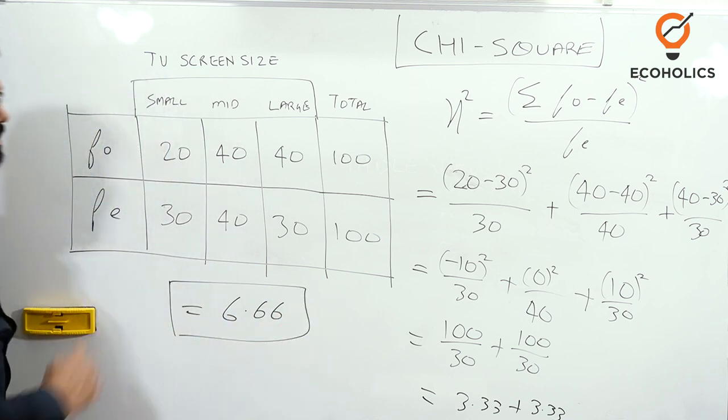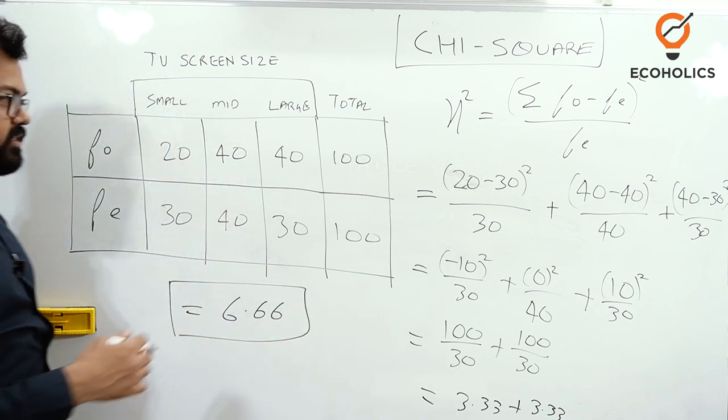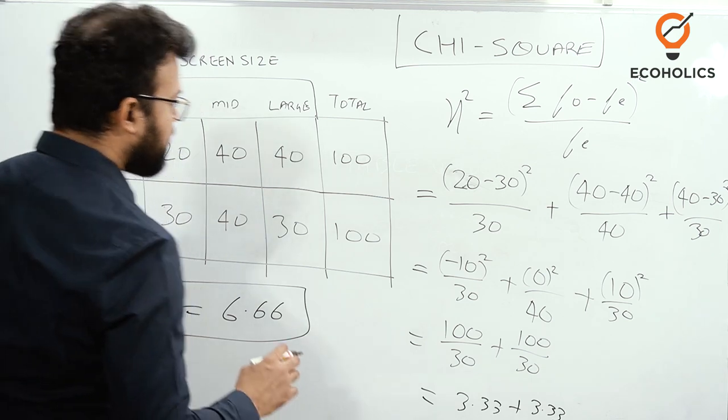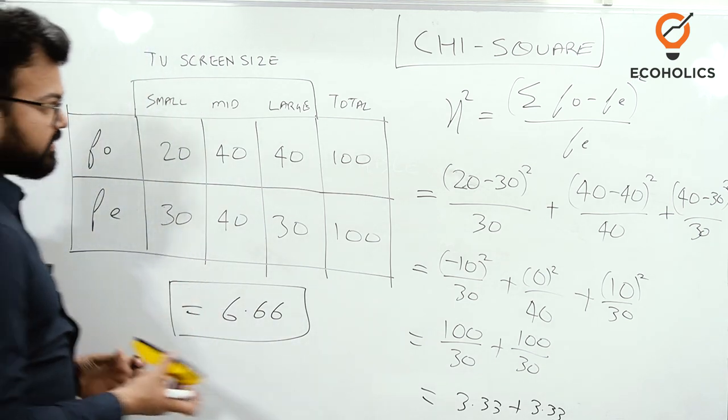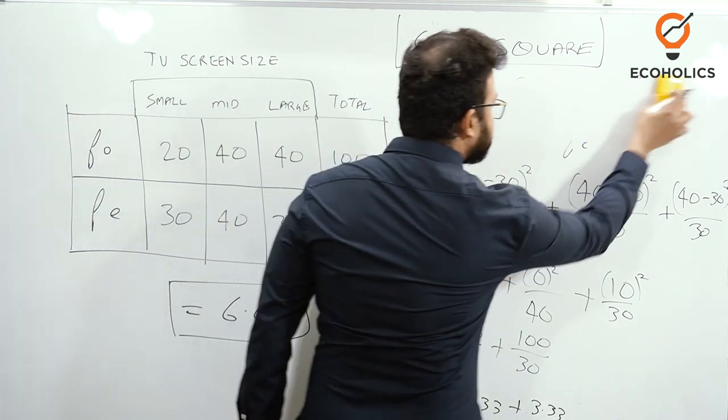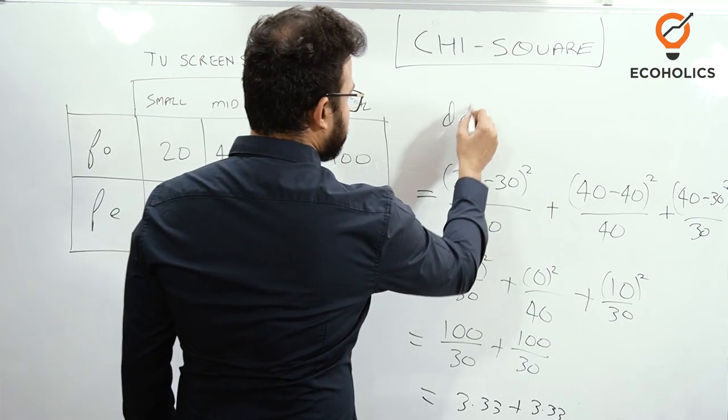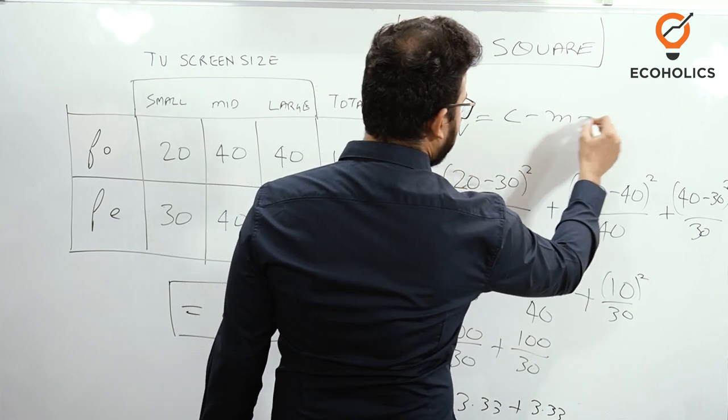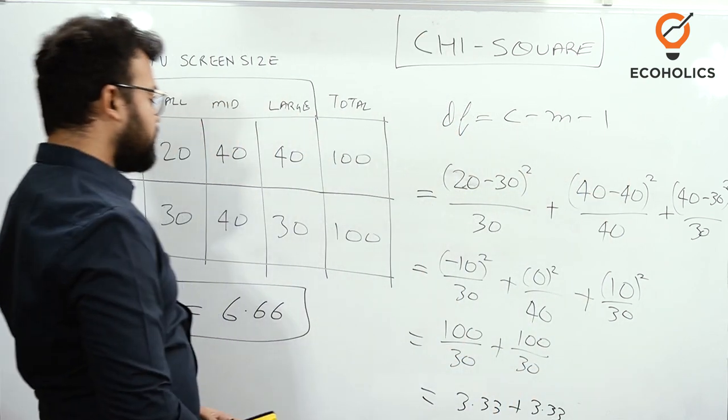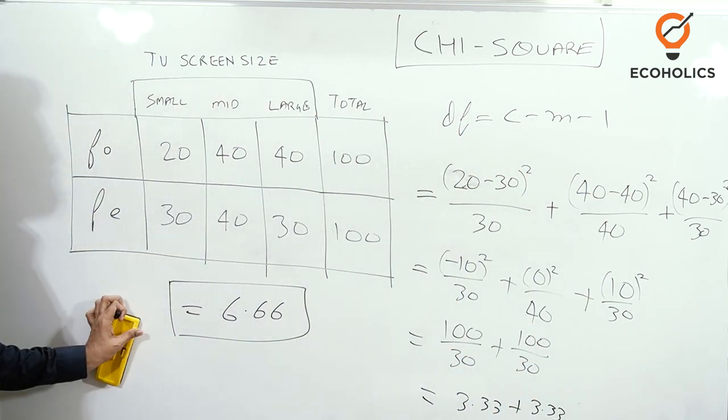This is the calculated value of chi-square. Now we'll see the table value. For that, we need to calculate the degree of freedom. So I'll rub the formula and write degree of freedom.